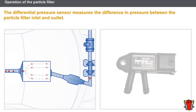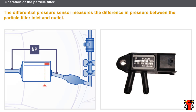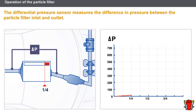The accumulation of particles inside the filter creates a resistance at the exhaust gas outlet. The differential pressure sensor measures the difference in pressure between the particle filter inlet and outlet. For an empty filter, the difference in pressure will be low. If the filter is full, the difference in pressure will be much greater.